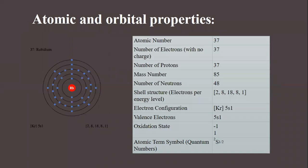Next are the atomic and orbital properties of rubidium: atomic number, number of electrons, number of protons, mass number, number of neutrons, shell structure, electronic configuration, valence electrons, and oxidation number — all of these values are listed here.